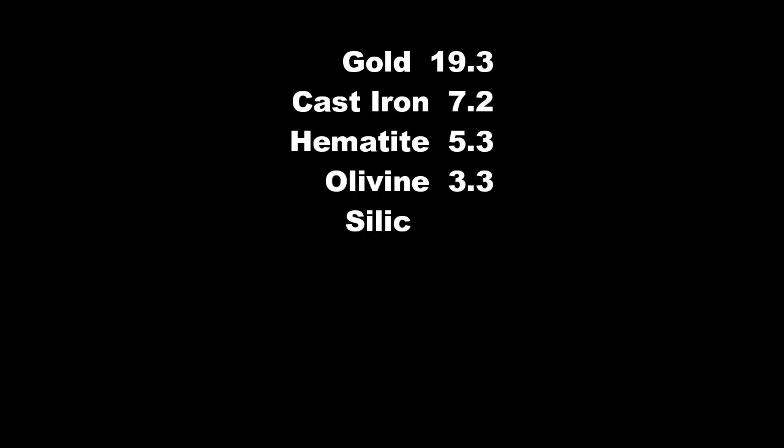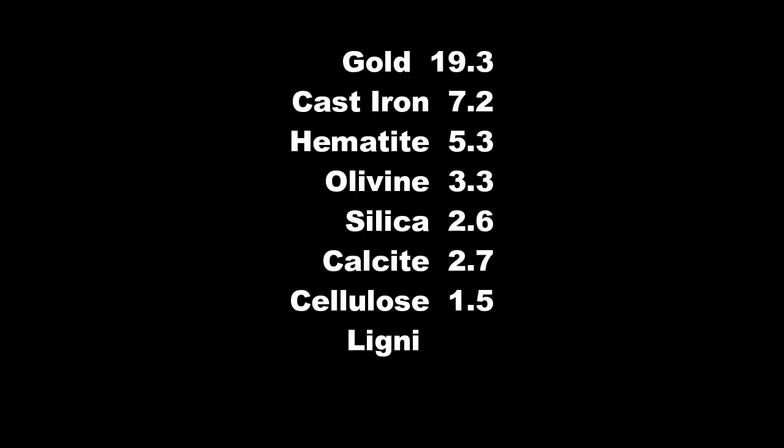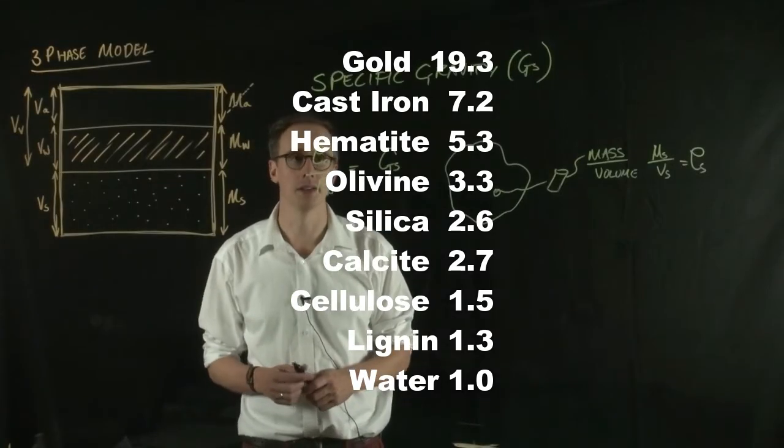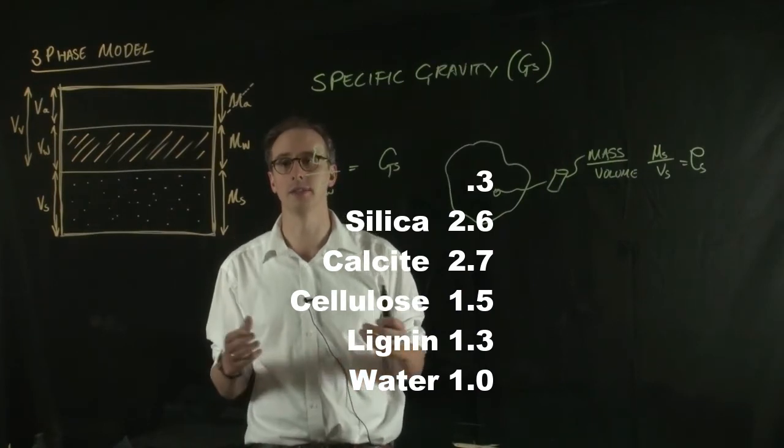From this table you can see that different materials have different specific gravities. Things like metals - iron, steel, and gold - have quite high specific gravities. Rocks and minerals have slightly lower specific gravities than that, and organic matter has lower still.